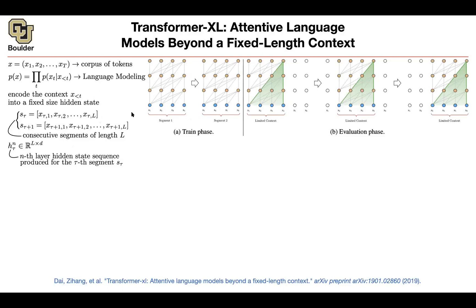These H values are what you see here. We want to go to the next layer. For H1, this is going to have length L, and each one is going to be a d-dimensional vector. That gives you H1, then you go to the next layer to get H2, up until the last layer. N is counting the layer and tau is counting the segment.